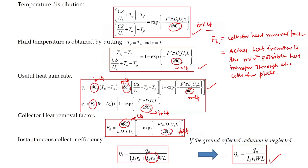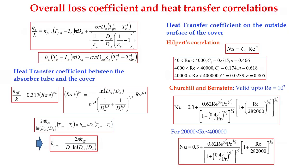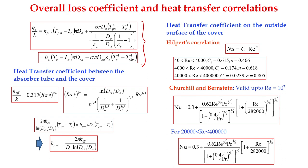Now let us learn how heat transfer coefficients are calculated. We need to account for losses because without calculating losses we cannot estimate the amount of heat we get from the system. This component is calculated using appropriate correlations. In order to calculate the heat transfer coefficient, we rely on correlations developed by researchers. To find the heat transfer coefficient on the outside surface of the cover, we use these correlations.